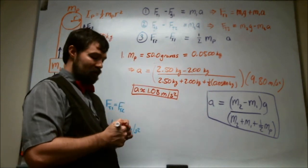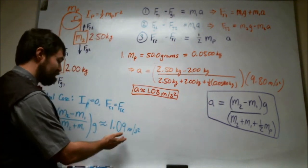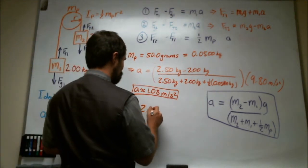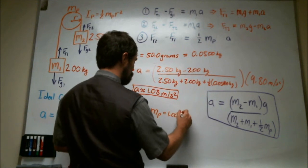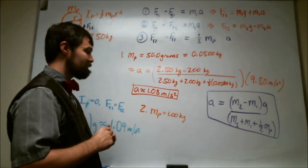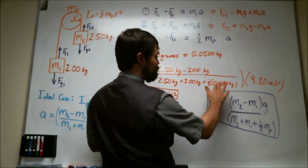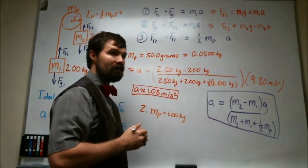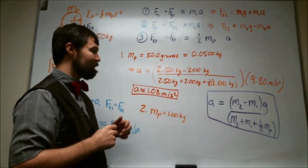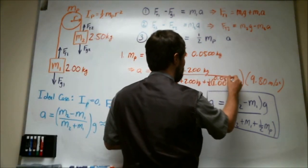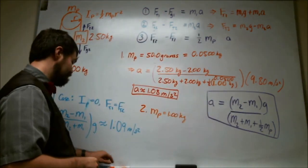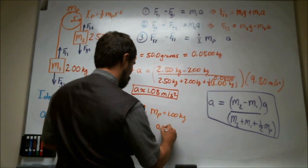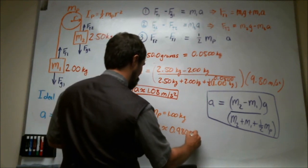So that's maybe a 1% difference from the ideal case, which was 1.09 meters per second squared. What happens if we end up doing a larger mass? Let's make the mass maybe 1 kilogram. If that's the case, then everything here stays the same. It's just that instead of 0.05, what we really end up with is 1.00 kilogram here. So that difference from the 0.05 kilogram to the 1.00 kilogram, that difference basically makes for a difference from an acceleration of 1.08 to an acceleration of about 0.98 meters per second squared.